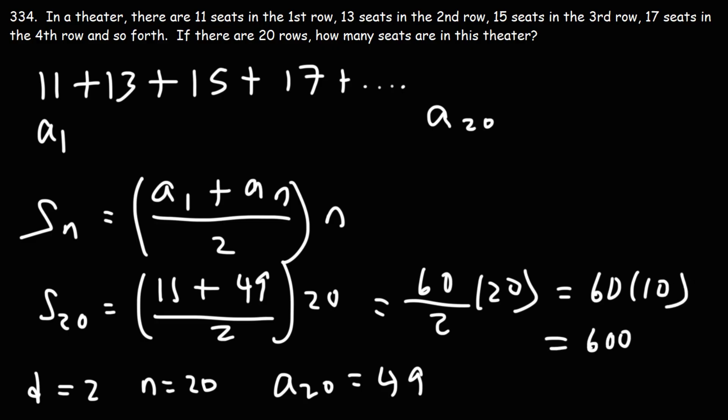So that's the answer. That is the sum of the first 20 terms. So that's how many seats there are in this theater. There's 11 seats in the first row, 13 in the second row, and there's 49 seats in the third row. When you add all these seats together, you're going to get 600.